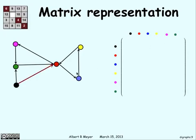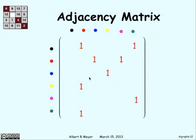For example, there's an edge that goes from the black to the red. So, on the black row, in the red column, we're going to put in a 1. Same thing, there's one that goes from black to green. We'll put black row, green column, put in another 1. And so on, for all the edges that we have in our graph.